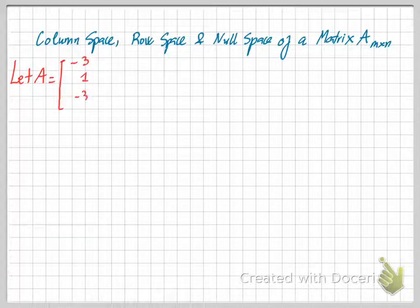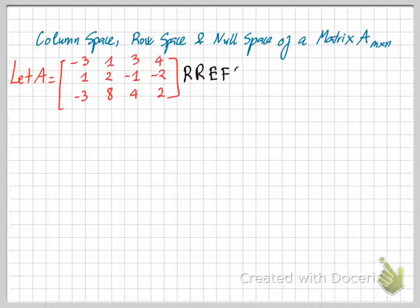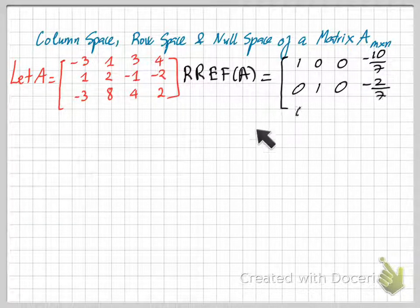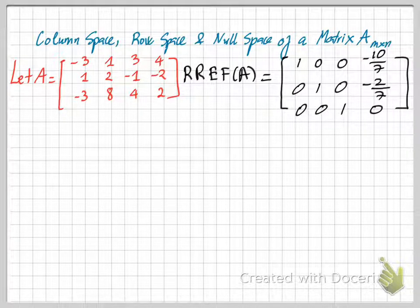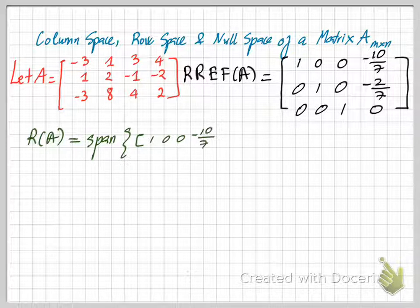For example, if you look at this matrix A here and we find the reduced row echelon form of A, which is this matrix here. And now we can look at this matrix, the reduced row echelon form of A, to find a basis for the row space of A.